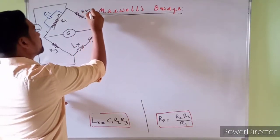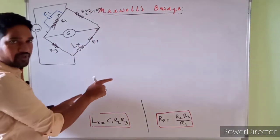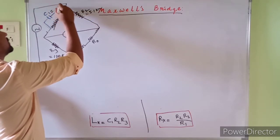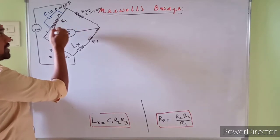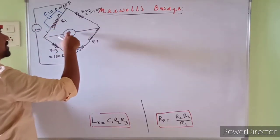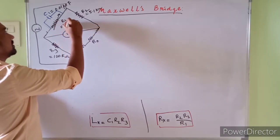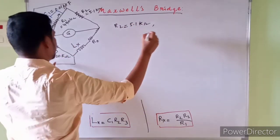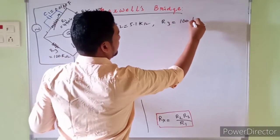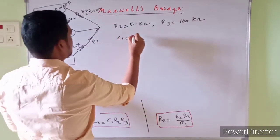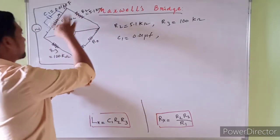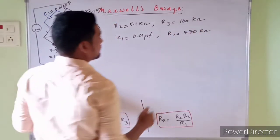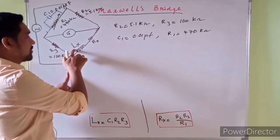Suppose in your Maxwell's bridge it is given that R2 = 5.1 kΩ, R3 = 100 kΩ, C1 = 0.01 μF, R1 is variable and the balance is obtained when R1 = 470 kΩ. We are asked to find the values of unknown inductance LX and unknown resistance RX.